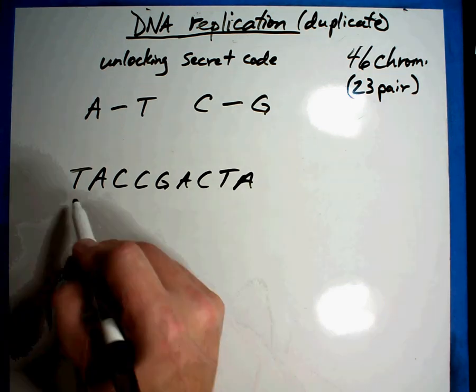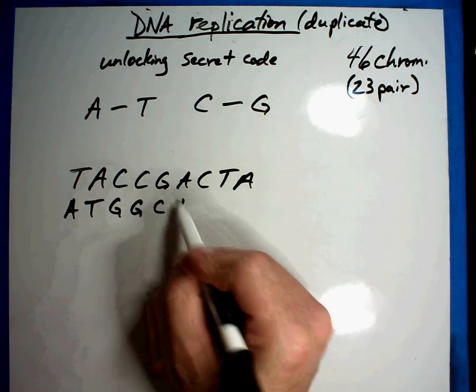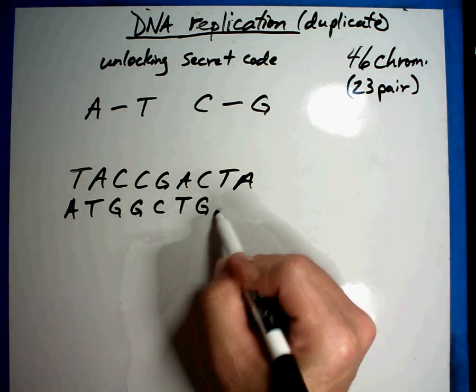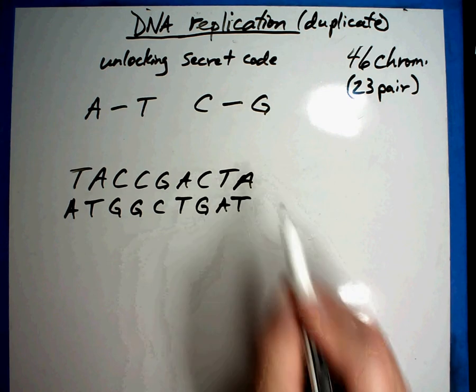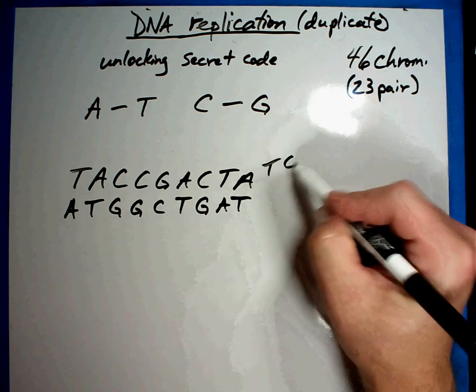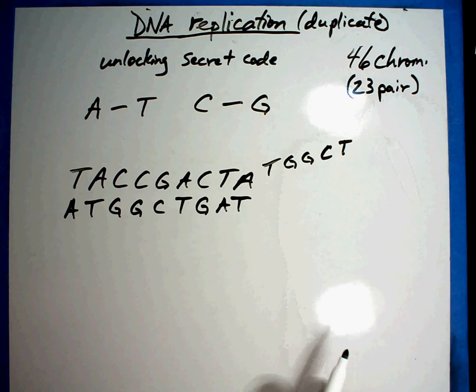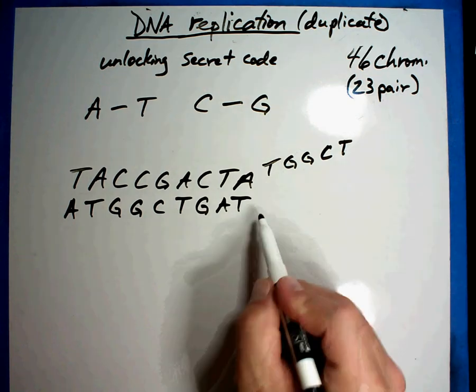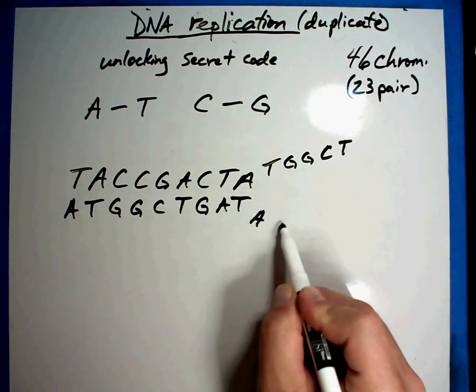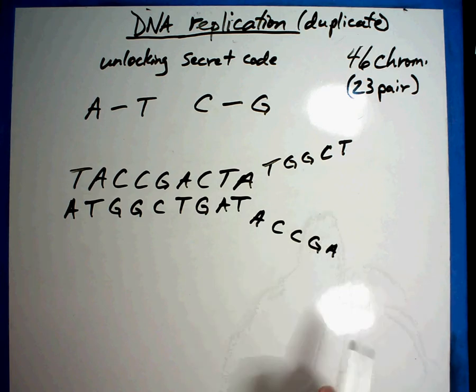All right. And then we'll take the complementary strand, A, T, G, G, C, T, G, A, T. There's my complementary strand. That works out pretty good. So we're going to add something on here. T, G, G, C, C, T. We'll just take that. And so what would go with that would be A, C, C, G, A. You may want to pause real quick and get that in, get that picture.